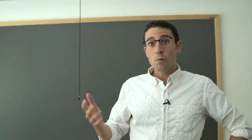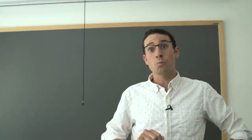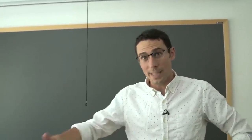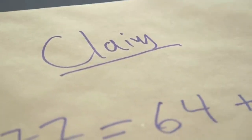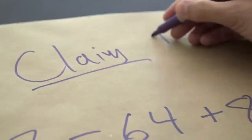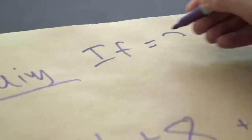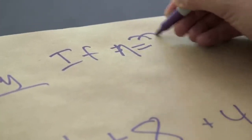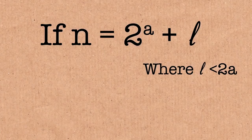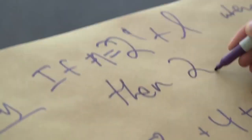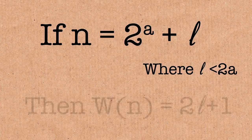And so the winning seat will be two l plus one if you write it in this way, because that's whose turn it will be after l steps. The theorem or claim is that if you've written n in this way, so if n is two to the a plus l where l is less than two to the a, it has to be strictly smaller. So in other words, two to the a is the biggest power that sat inside of n. Then the winning seat is going to be two l plus one.